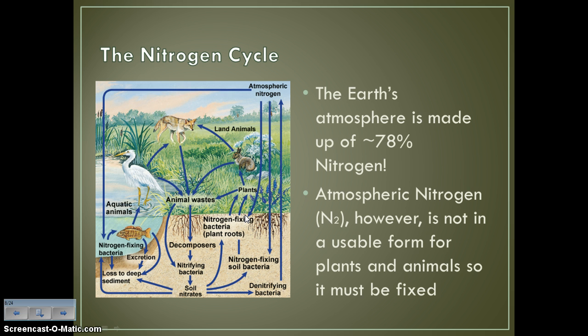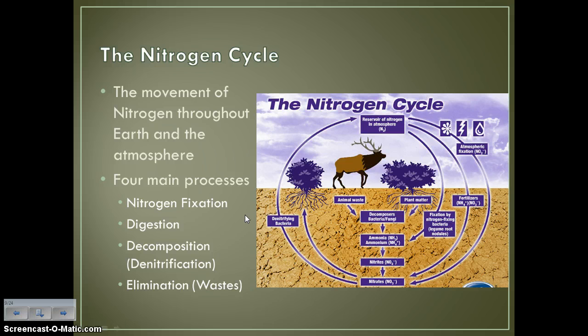Next up we have the nitrogen cycle. The earth's atmosphere is actually made up of about 78% nitrogen. Most people think that when you're breathing in air you're breathing in oxygen, but very little of air is oxygen — most of it is actually nitrogen. The problem is that the nitrogen that exists in the atmosphere, N₂, is not a usable form for plants and animals. It has to be what's called fixed so that it can be used by living things. The movement of nitrogen throughout the earth and the atmosphere is known as the nitrogen cycle.